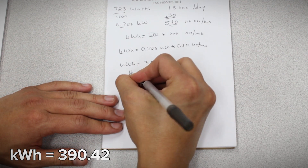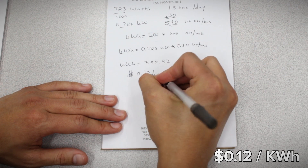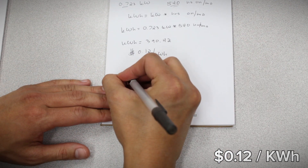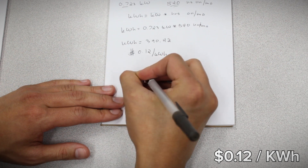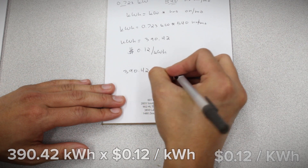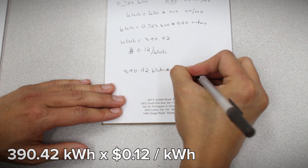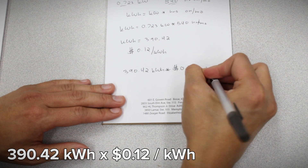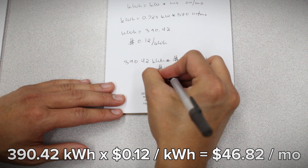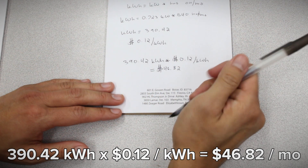We did a Google search — on average it costs an American 12 cents for each kilowatt hour. So we multiply that out: 390.42 kilowatt hours times 12 cents per kilowatt hour, and we end up with $46.82.